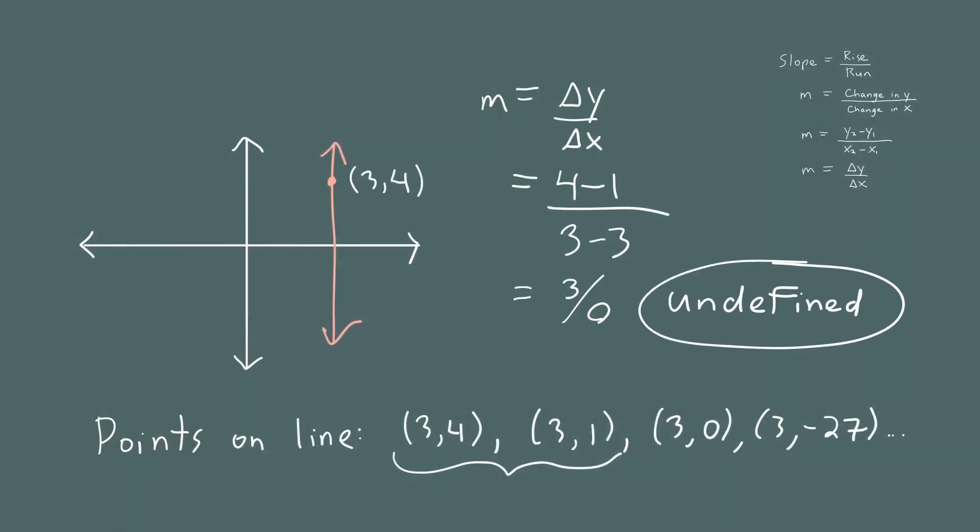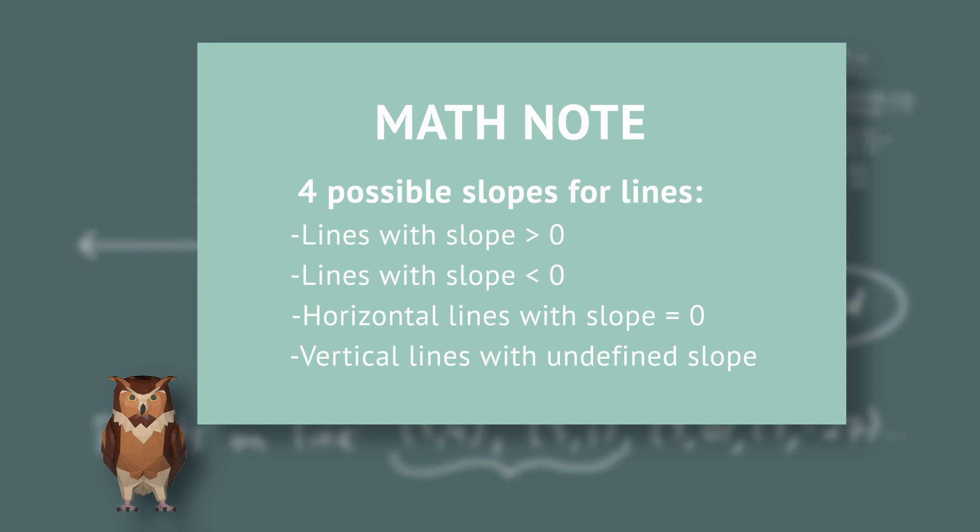These are the four types of lines you'll encounter: lines with a positive slope, lines with a negative slope, a horizontal line which has slope 0, and a vertical line which has an undefined slope — its slope is simply not defined.